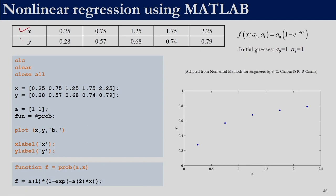Now we look at the nlinfit function for direct nonlinear regression. Here we have data x and y and must fit the model a₀·(1 − e^(−a₁x)). Nonlinear regression requires initial starting values. We choose a₀ = 1 and a₁ = 1 as the initial guess, and nlinfit's task is to find better values.